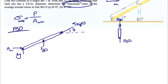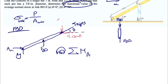We can do the moment equation to find F_BD, and after that find the maximum average normal stress. Taking the moment about point A — counterclockwise positive — we can eliminate A_x and A_y. We'll end up with the moments of F_BD and the four-kip force. First, let's find the x and y components of the four kips: four times cosine theta, and four times sine theta.